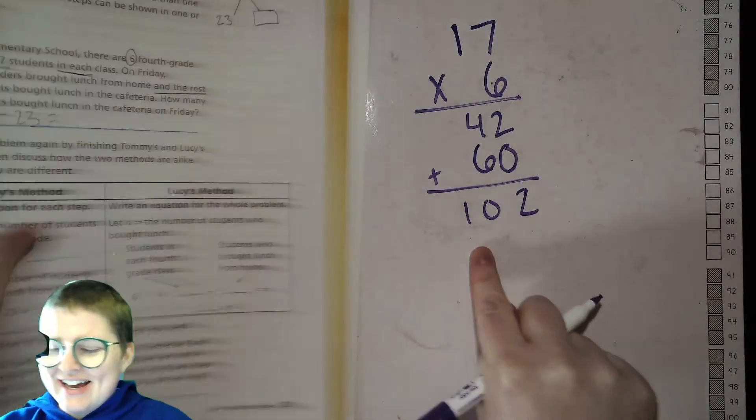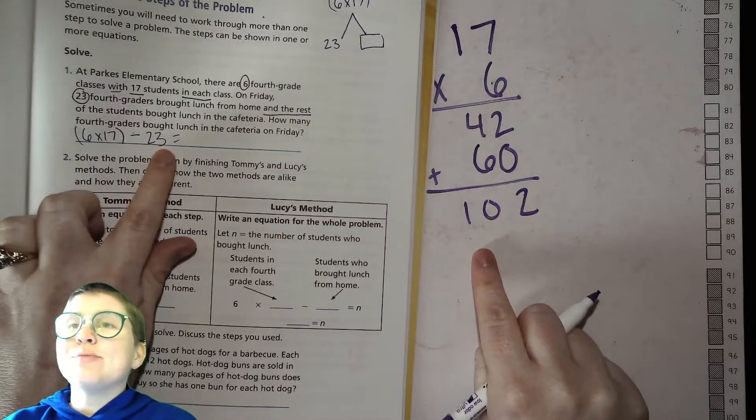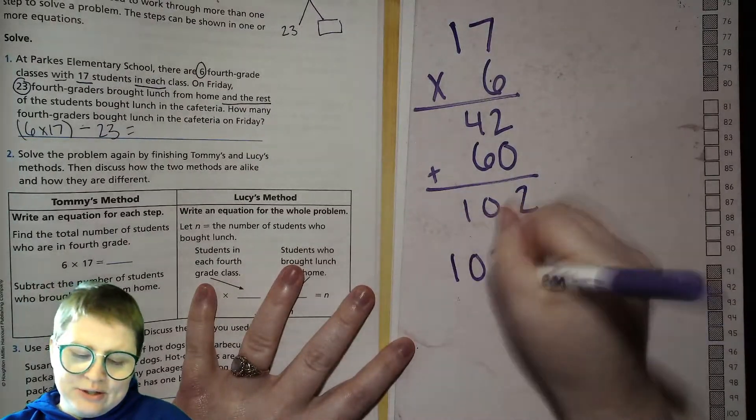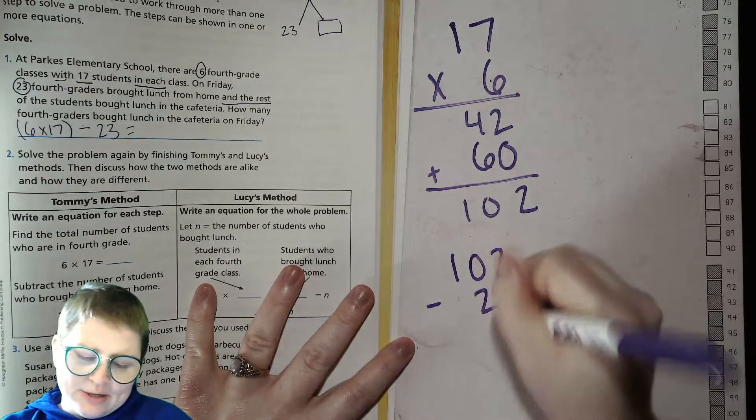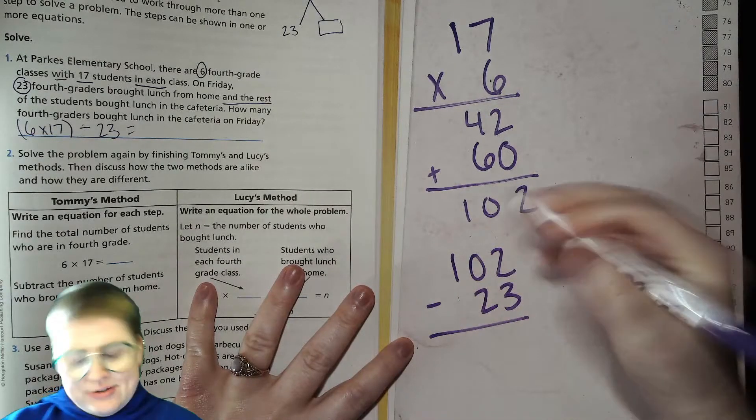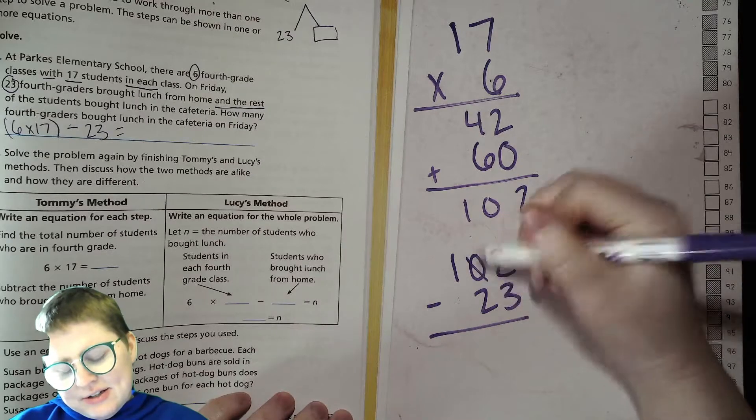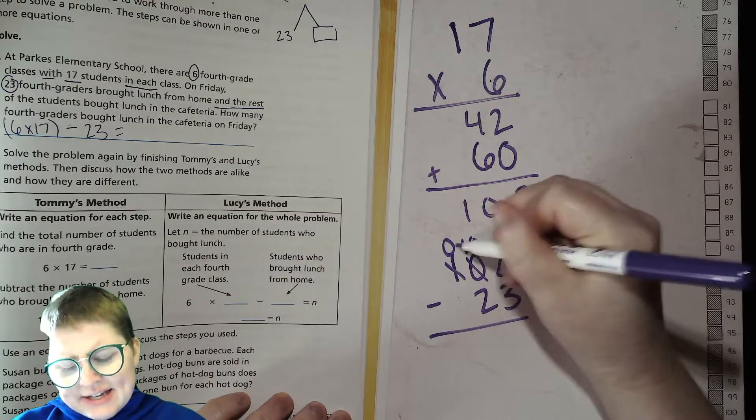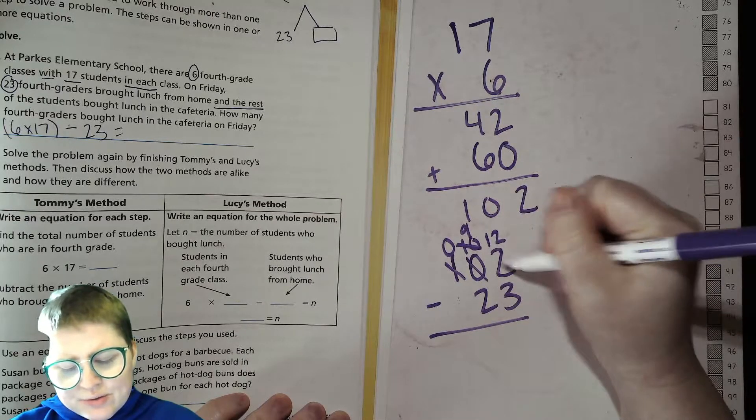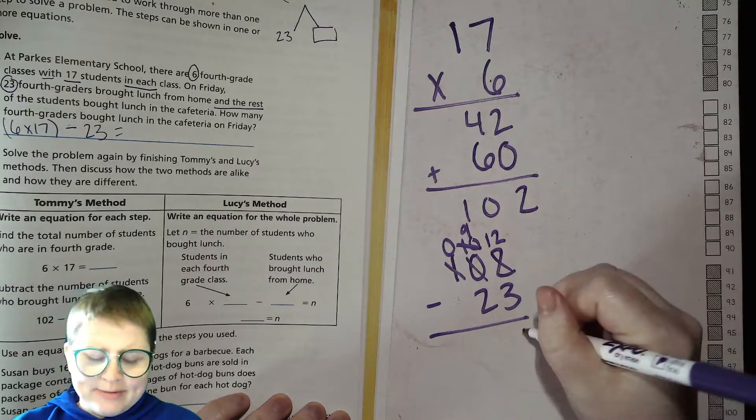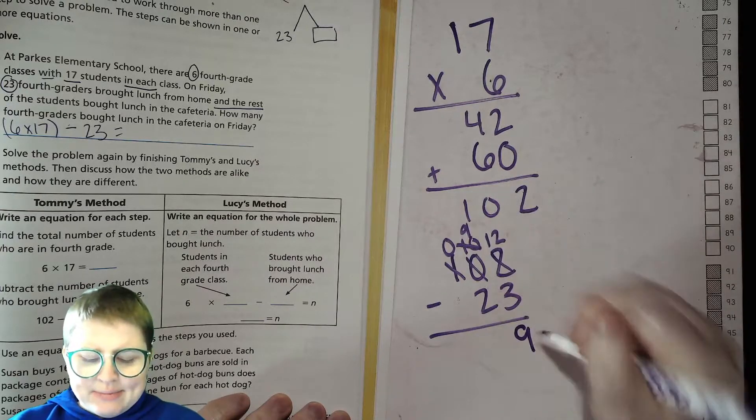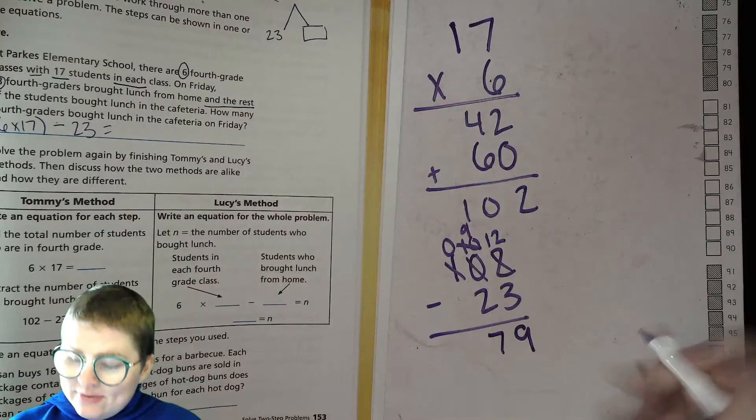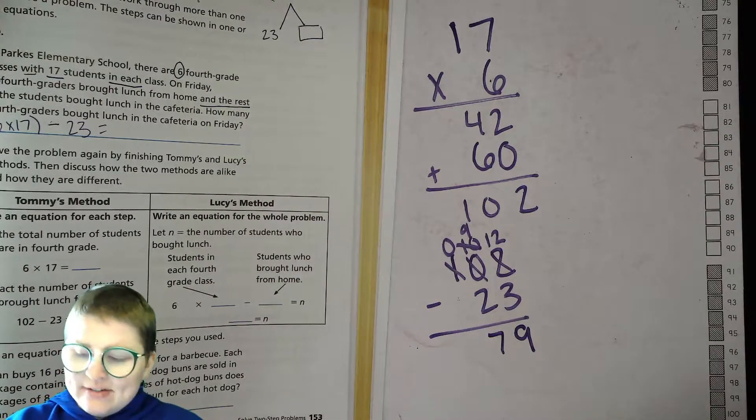There's 102 total kids. Now we're going to take that and what are we going to do? We're going to remove those kids who brought lunch from home. So then we have 102 minus 23. 2 minus 3, can't do that. So you got to ungroup. Nothing there. So you go over here. You have 0 hundreds, 10 tens, leave 9 of those tens, bring one of them over to join the ones place, and now you have 12 minus 3, which is 9. And 9 tens minus 2 tens, which is 7 tens. So then we found we have 79 kids.